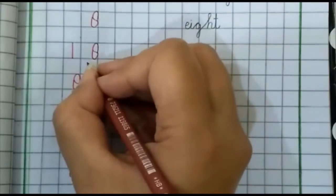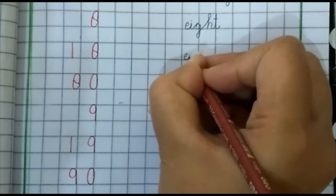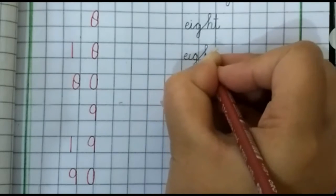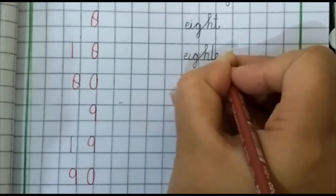Next number is 18. E, I, G, H, T, double E, N.